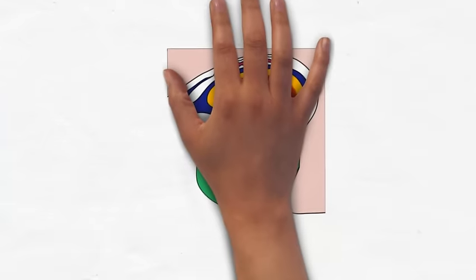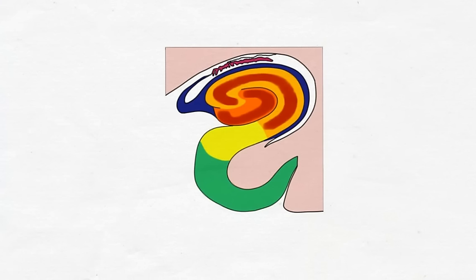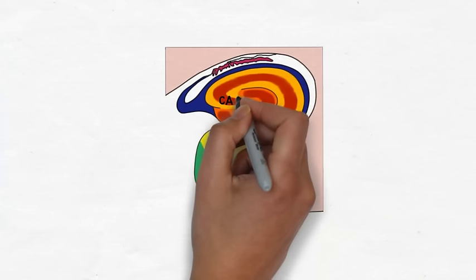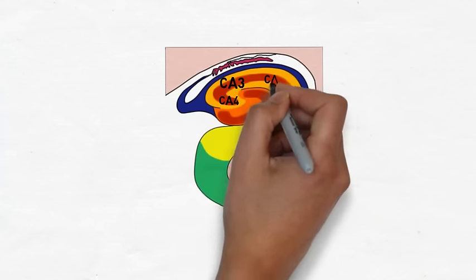In addition to being compared to a seahorse, the hippocampus has also been likened to the curved horn of a ram, or the horns of the ancient Egyptian god Amon, and thus has been called Amon's horn or cornu ammonis. Accordingly, the hippocampus has been subdivided anatomically into four regions designated CA1 through CA4. The CA stands for cornu ammonis.